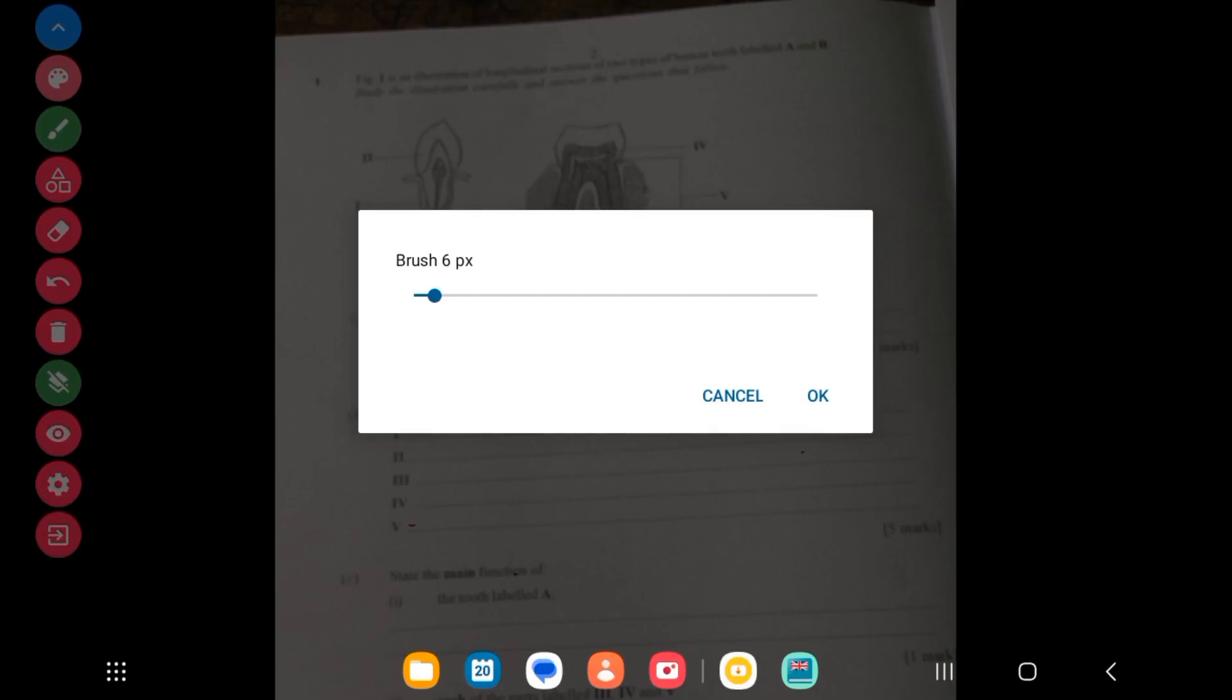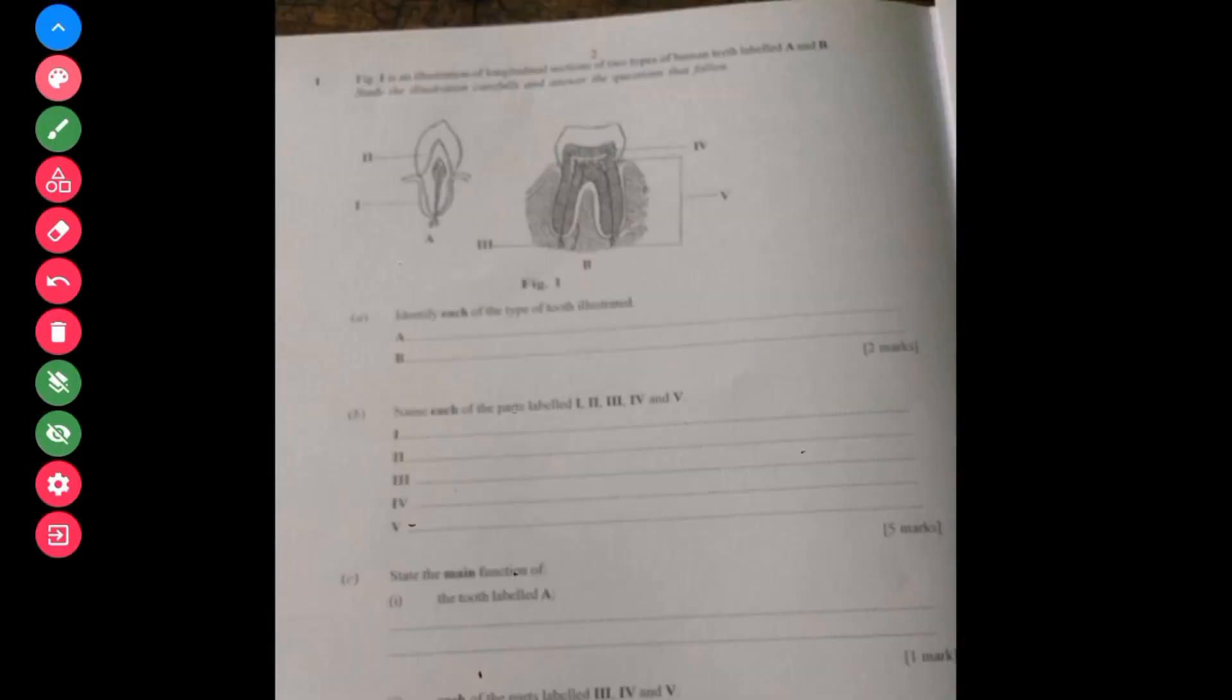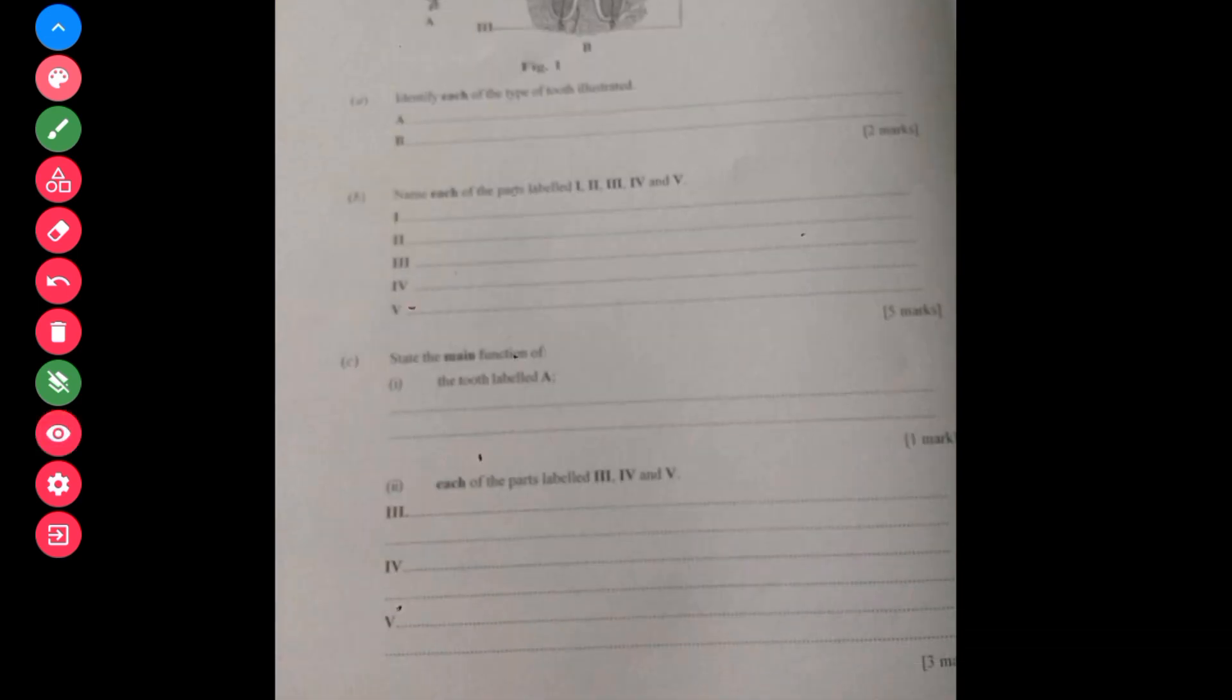Question 1a had to do with indentation. You were expected to identify them as you write your A and your B here. Then you label the parts. This is just a review, look at them later on. Then you were also asked to state the function of the parts labeled A and then each of the parts labeled.